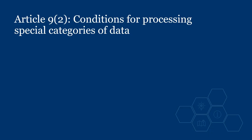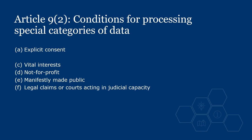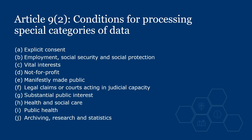We have now covered the 10 conditions for processing special category data in Article 9. Five of them are complete in the UK GDPR — conditions A and C to F. For the other five, the controller needs to identify and meet the specific requirements of a condition in Schedule 1 of the DPA. There are 23 possible substantial public interest conditions in Schedule 1 Part 2 for Condition G.